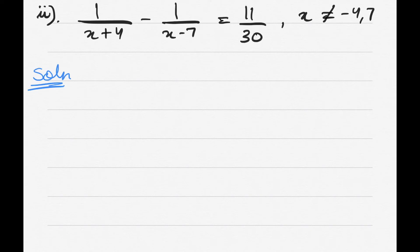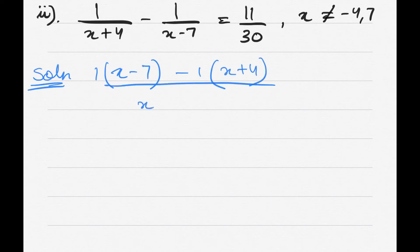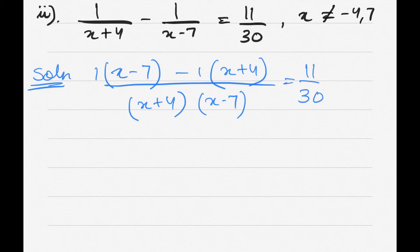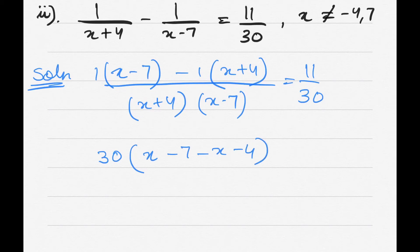For the solution, we take the LCM of the left side: [(x-7) - (x+4)] / [(x+4)(x-7)] = 11/30. Opening the bracket in the numerator gives x - 7 - x - 4. Cross-multiplying, we get 30 on the left and 11(x+4)(x-7) on the right.